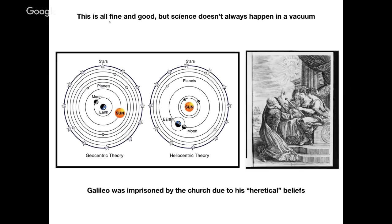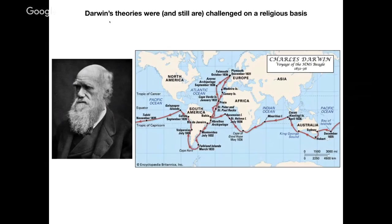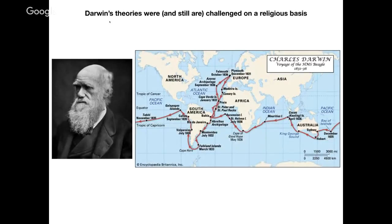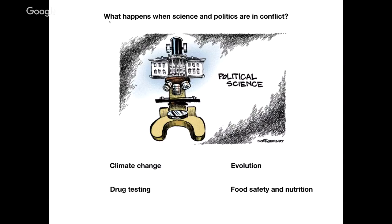This is not just restricted to times in the Renaissance. Another well-known scientist, Charles Darwin, who went on a long circum-global boat trip on the HMS Beagle — looking at different animals from all over the world — came up with the theory of natural selection. This theory was met with quite a bit of resistance and challenged most often on a religious basis. And it still is today. We still hear about efforts to push back on the teaching of evolution in schools.